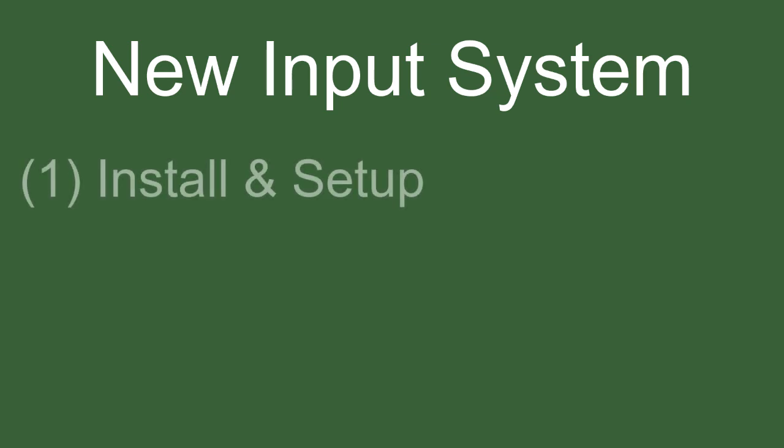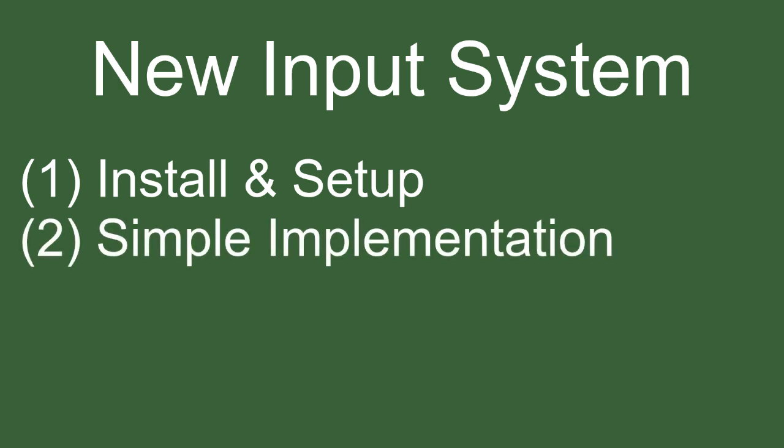For this video I'm trying a new format, so if you like it let me know down below — any feedback is appreciated. Step one: I'm going to teach you how to install and set up the new input system and get it working with your Unity project. Step two: I'm going to show you how to hardcode it into your scripts, just like you're used to doing with `Input.GetKeyDown` for example.